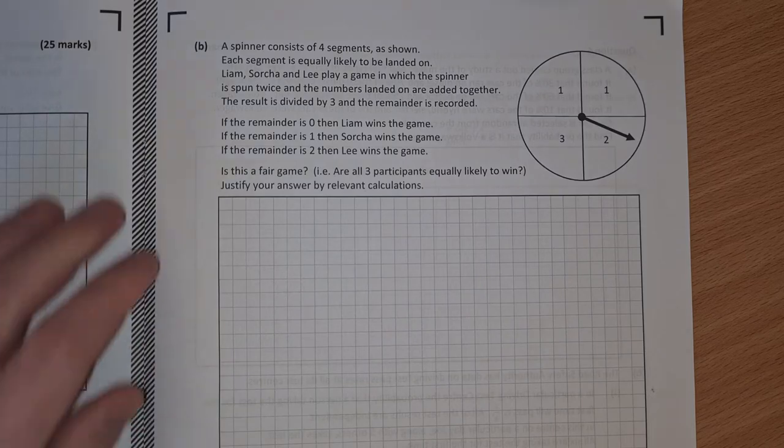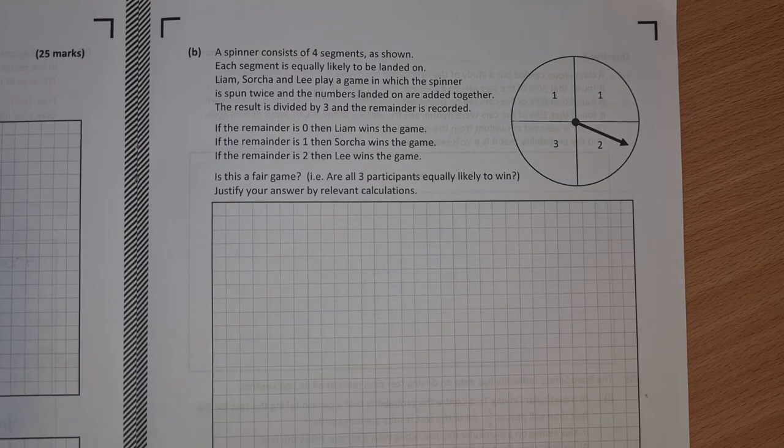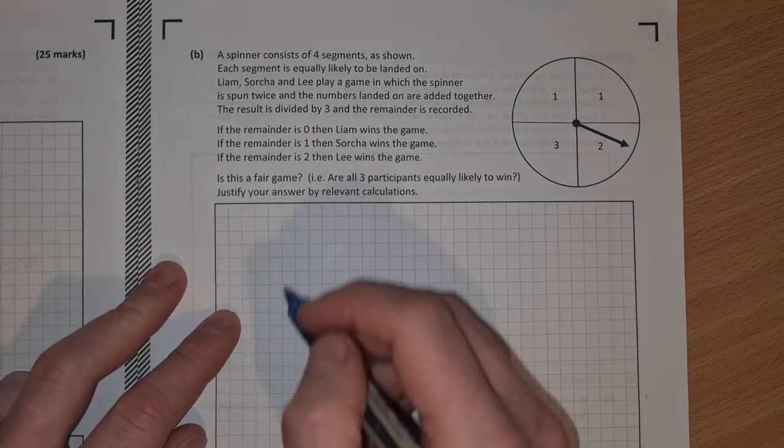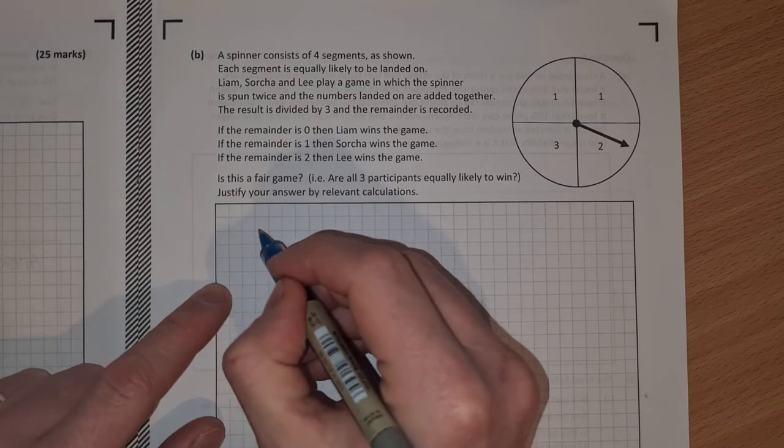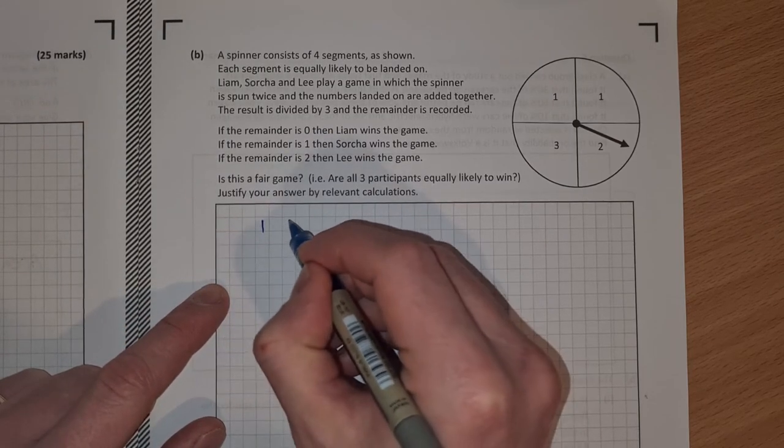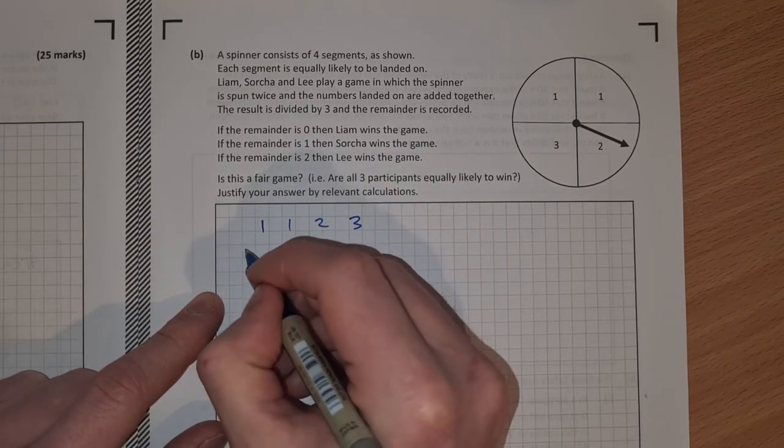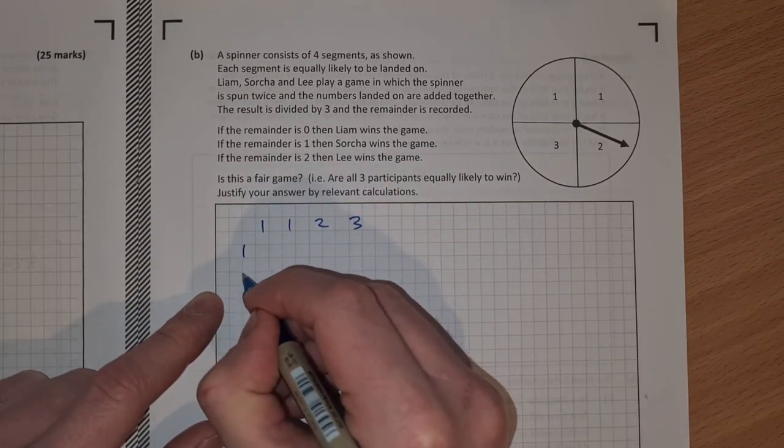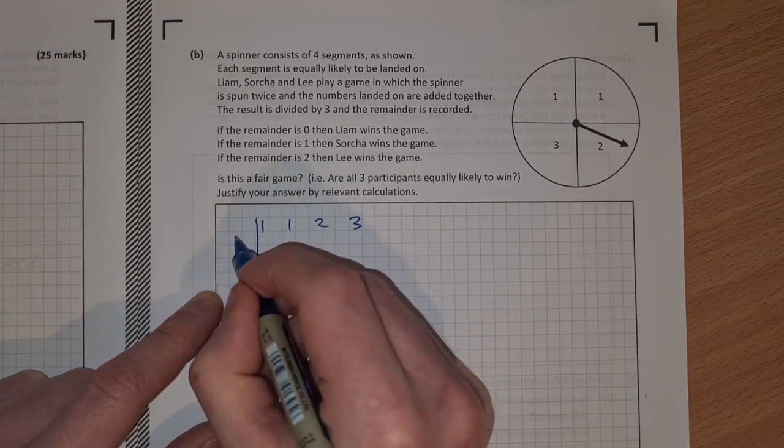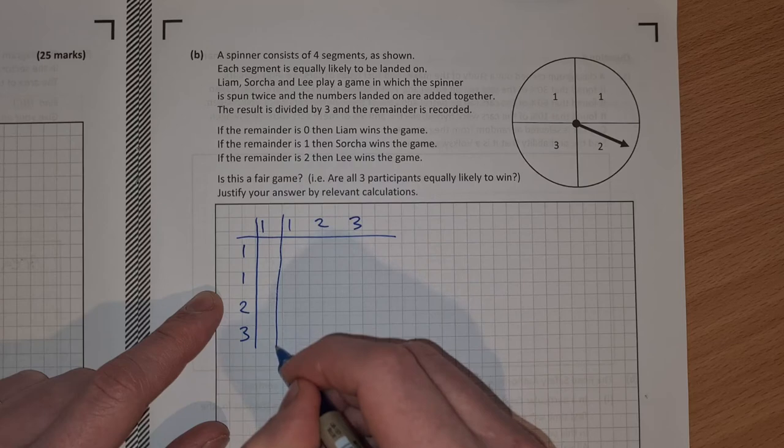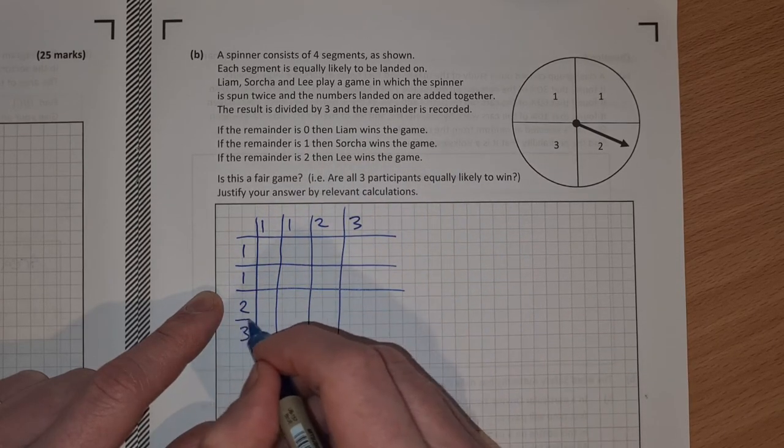OK, so for this, this is a lot easier than it looks. There aren't actually too many calculations in it. What I would do is I'd set up a table of all possible outcomes. So I'd have 1, 1, 2, 3. This is the first spin and the second spin down here. I'd have 1, 1, 2, 3. And I'm just going to make a 2D table here like this.